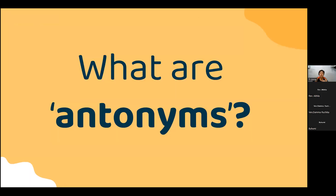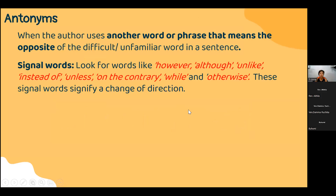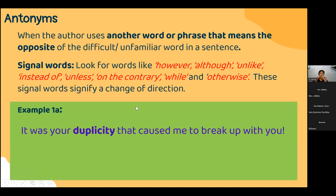Now that we understand synonyms, let's move on to antonyms. Antonyms are words with an opposite meaning to the difficult word. Signal words that indicate antonyms include: however, although, unlike, instead of, unless, on the contrary. These signal words show a change of direction in the sentence.